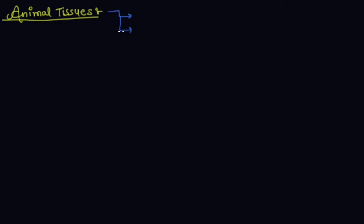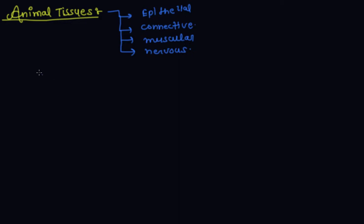Hi friends, today I discuss animal tissues. Animal tissue is of four types: the first is epithelial tissue, second is connective tissue, third is muscular tissue, and the fourth is nervous tissue. So the first discussion is epithelial tissue.